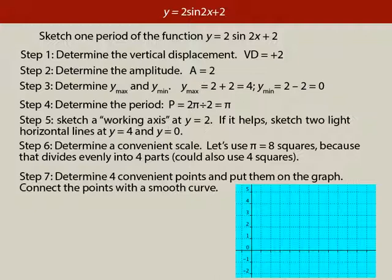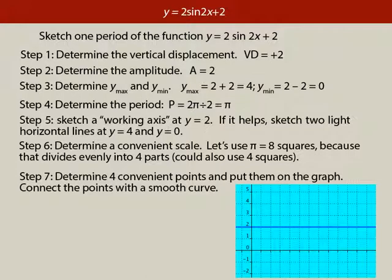Determine the period — that's given by the 2 in front of the x. So 2pi divided by 2 is pi. Now we'll sketch a working axis, and that's the vertical displacement, y equals 2 — that's where the graph will be centered about. If it helps, sketch two light horizontal lines at y equals 4 (the maximum) and y equals 0. There's my working axis at y equals 2. This will be the maximum the sine wave goes up to, and this will be the minimum. You don't have to draw those lines, but if it helps, draw them.